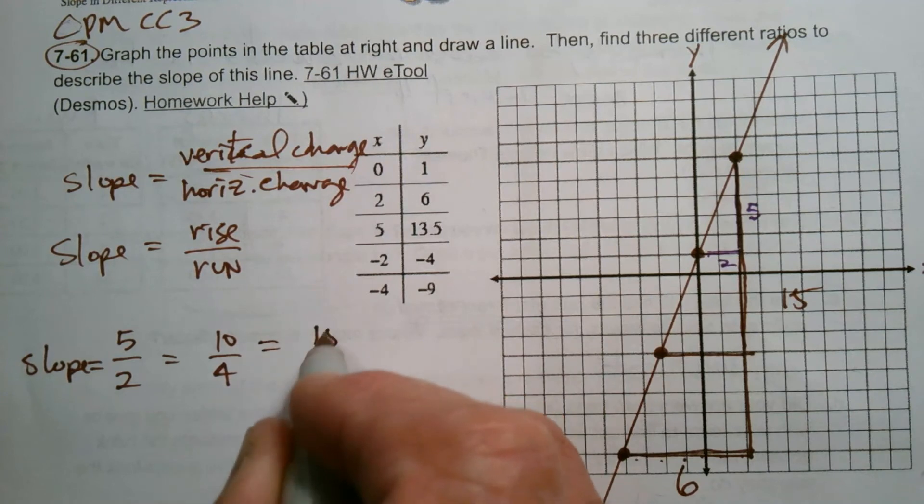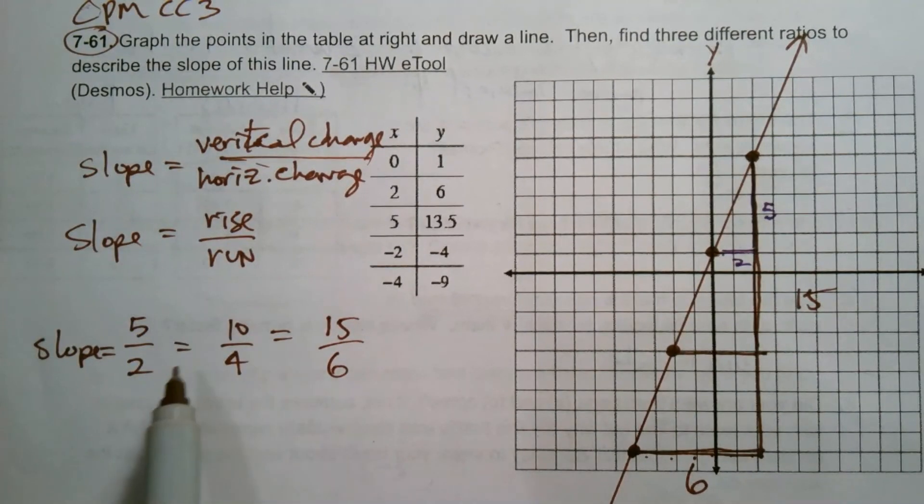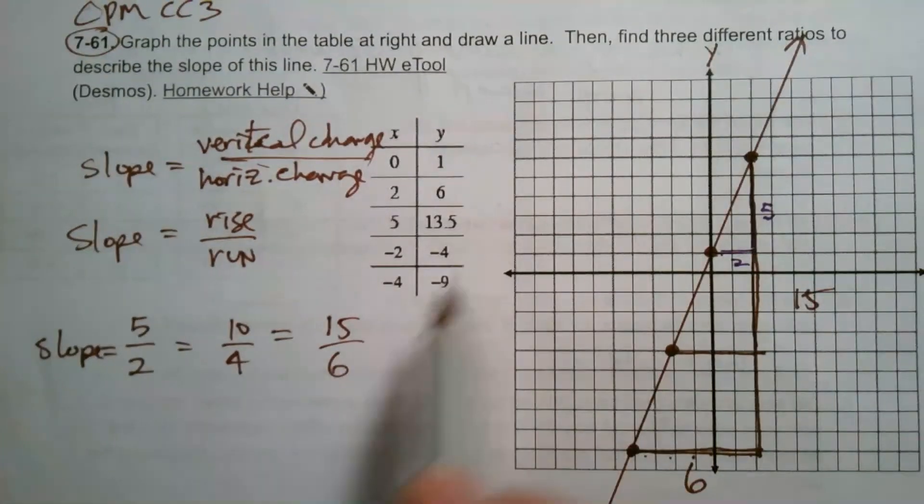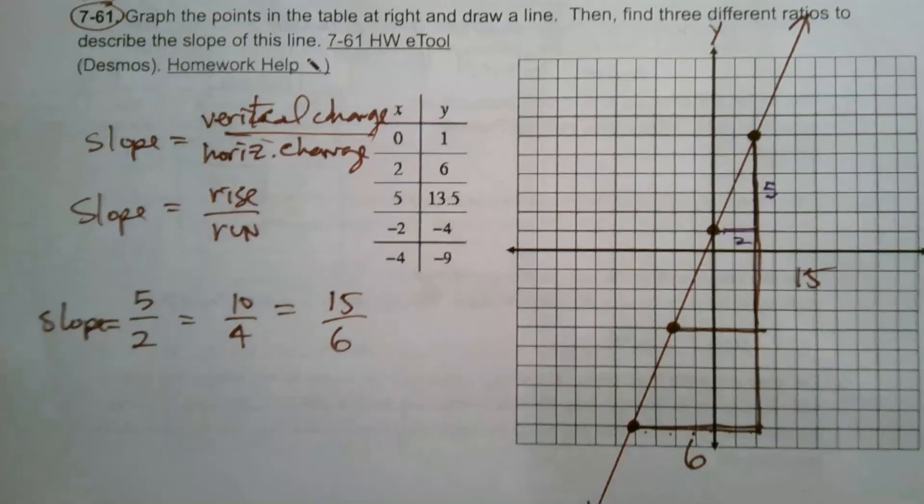So there's another description of slope: 15 over six. Each of those are proportional, equal ratios, I should say. They're equivalent ratios to describe the slope. Okay, here we go.